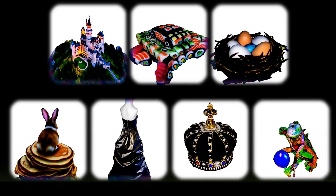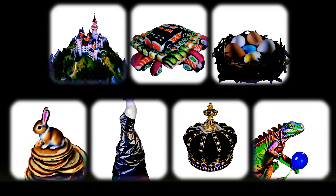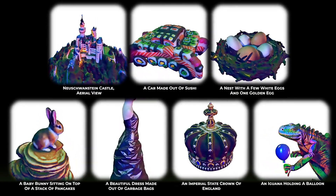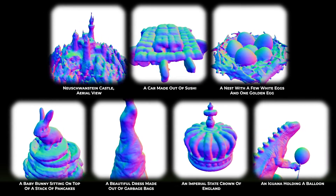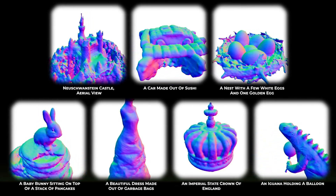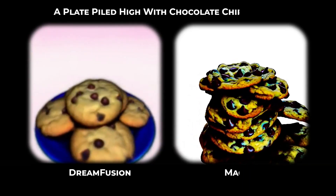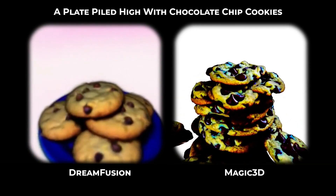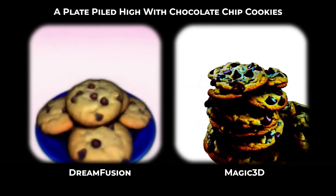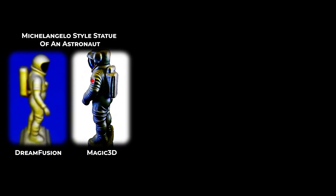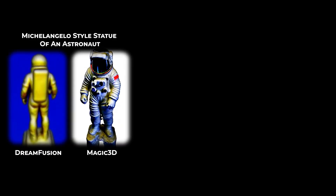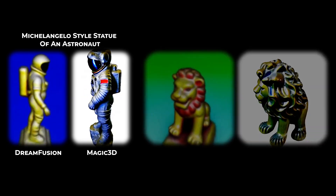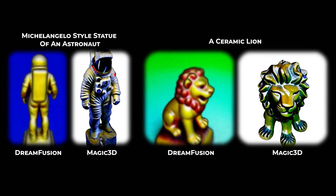You can now create high-resolution 3D mesh models from text in just minutes using Magic 3D, an amazing new AI. Compared to DreamFusion, which came out a few months ago, the difference in speed and quality is incredible. Magic 3D generates models twice as fast with stunning detail.